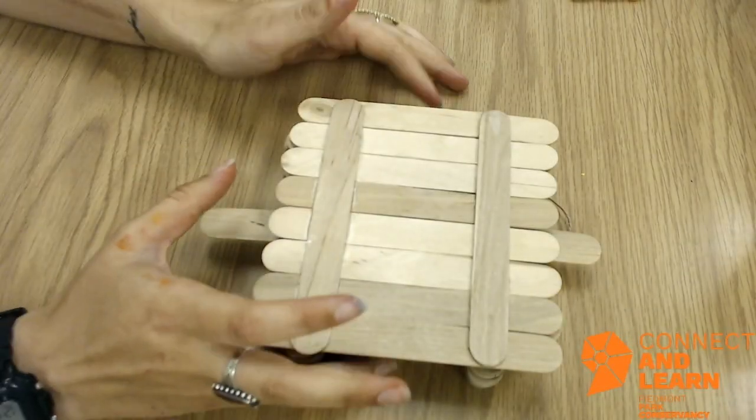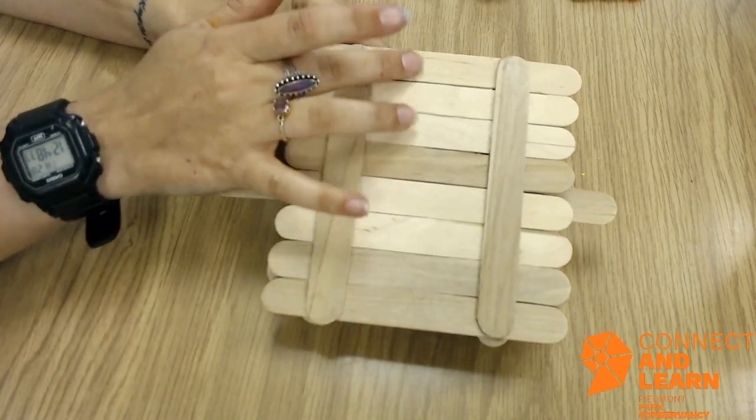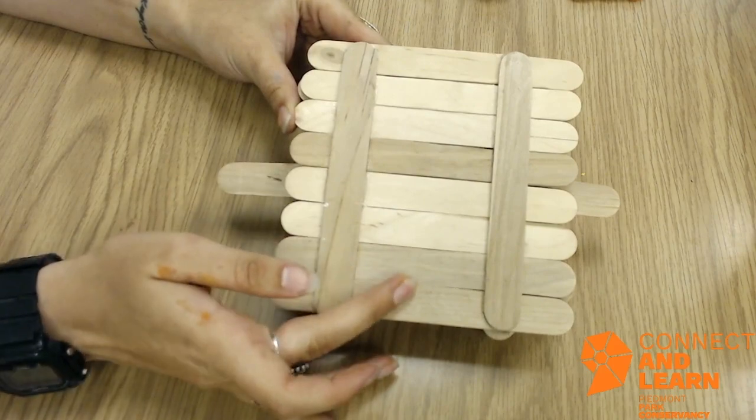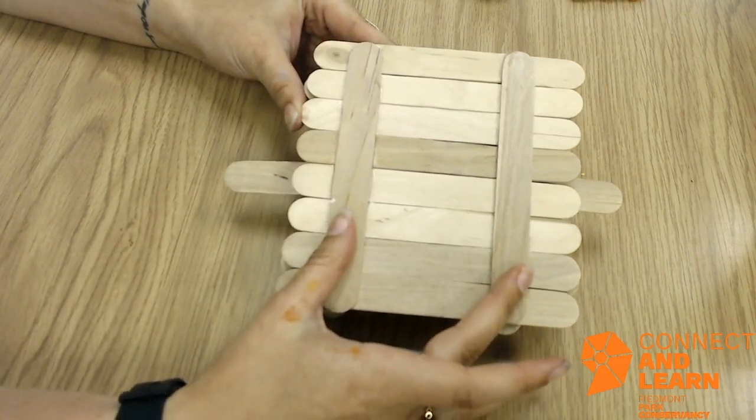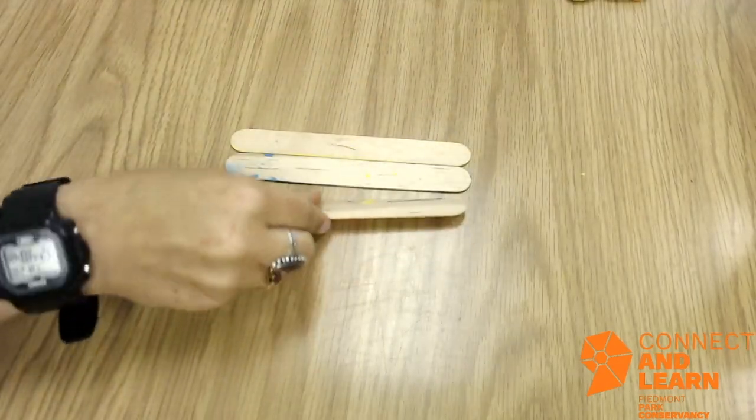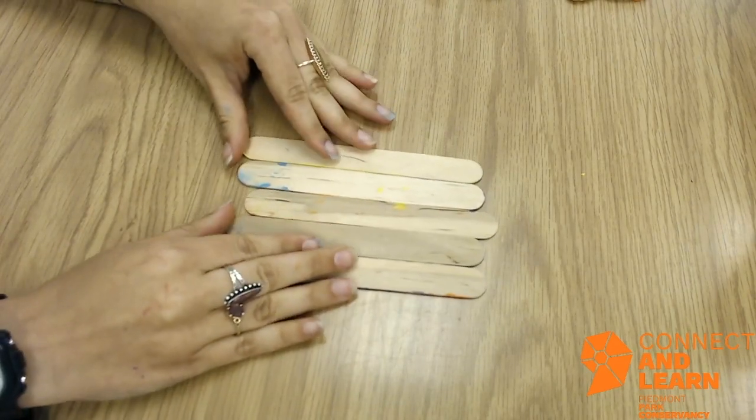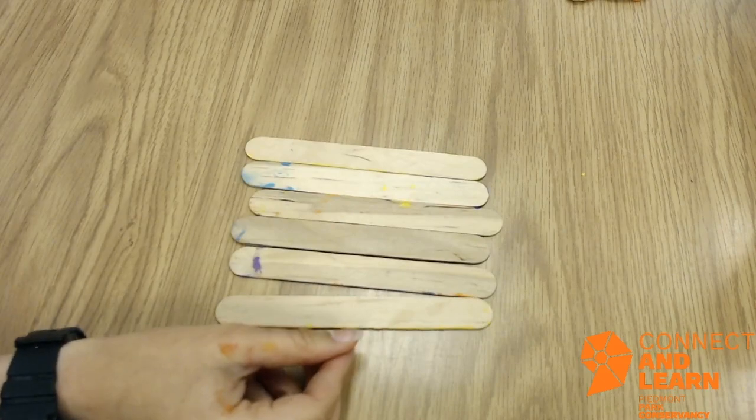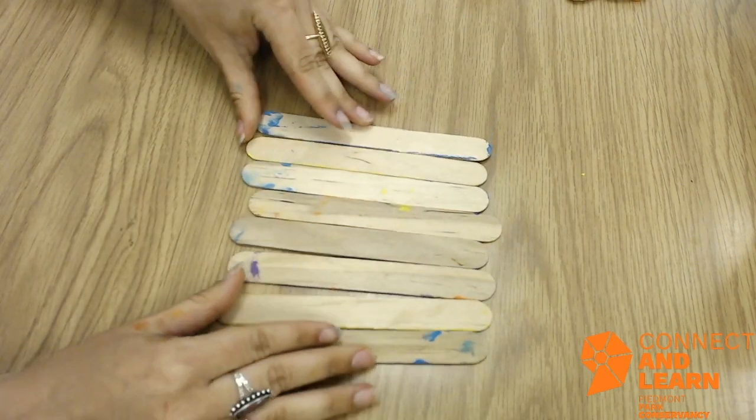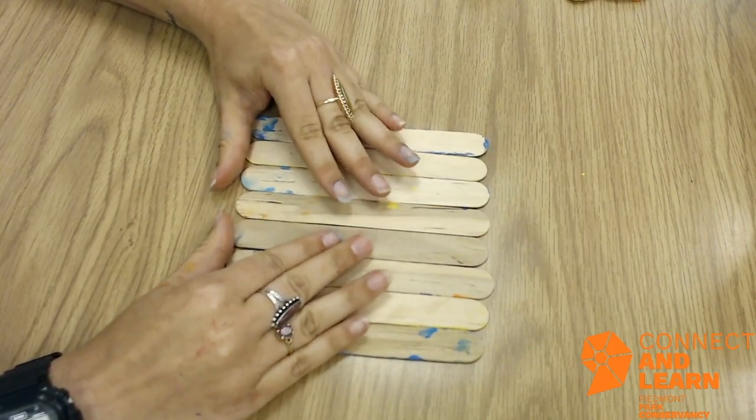Our first step is building the base. We're going to take eight popsicle sticks and line those up, then glue two base pieces down. Make sure we line these up, and I'm going to glue these down and hold it in place.